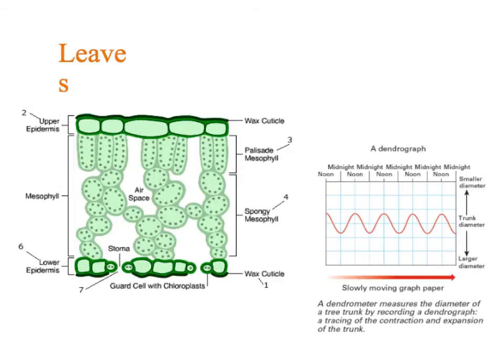Leaves are the exchange surface for gases in a plant. They're not massively adapted, but they don't need to be, because they're not particularly metabolically active. The site of gas exchange is through the stomata, and it's the guard cells that open and close the stomata. When the plant has plenty of water, the stomata will be open. High light intensity will also cause the stomata to open. Carbon dioxide diffuses down its concentration gradient, from a high concentration outside the leaf, through the stomata and the air spaces, until it reaches the palisade cells where it can be used in photosynthesis.